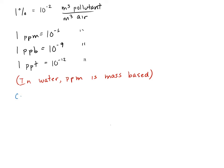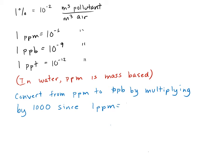So, in general, we would convert among these different measures, for example, from ppm to ppb by multiplying by 1,000, since 1 ppm is equal to 1,000 ppb.